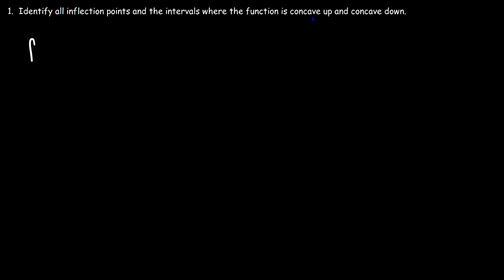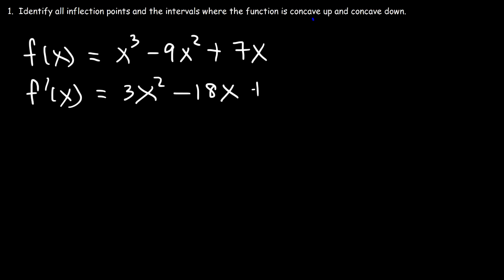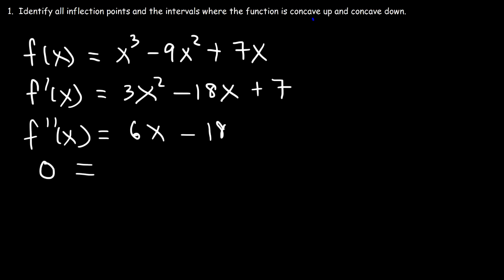Let's say that f(x) = x³ − 9x² + 7x. Identify all inflection points and determine the intervals where the function is concave up and concave down. The first thing we need to do is find the second derivative. The first derivative is: the derivative of x³ is 3x², the derivative of 9x² is 18x, and the derivative of 7x is 7. So f′(x) = 3x² − 18x + 7. Now for the second derivative: the derivative of 3x² is 6x, and the derivative of −18x is −18. So f″(x) = 6x − 18. Set it equal to zero to find the inflection points.